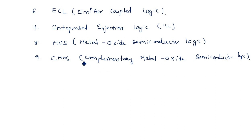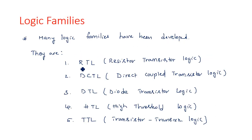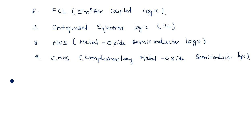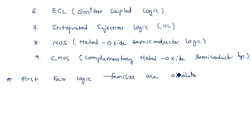These are the different types of logic families. However, Resistor Transistor Logic, Direct Coupled Transistor Logic, Diode Transistor Logic, and High Threshold Logic — these four logic families are obsolete or outdated. We are not generally using them nowadays.